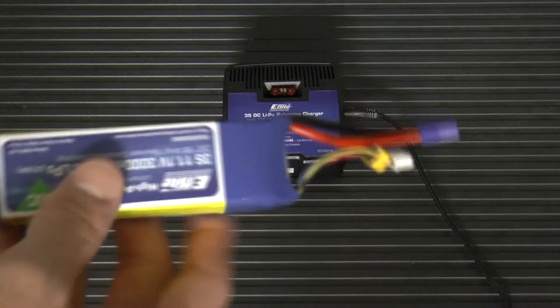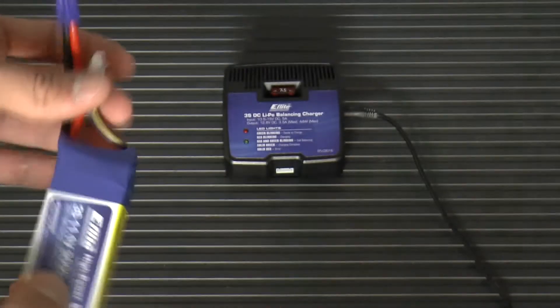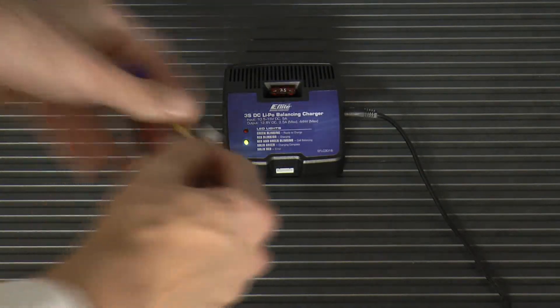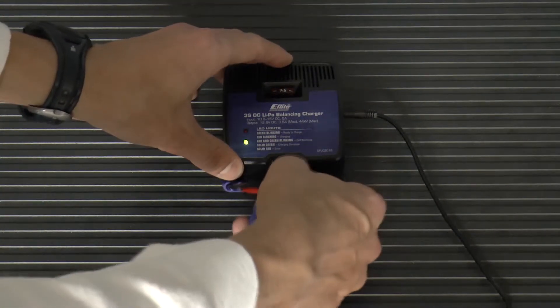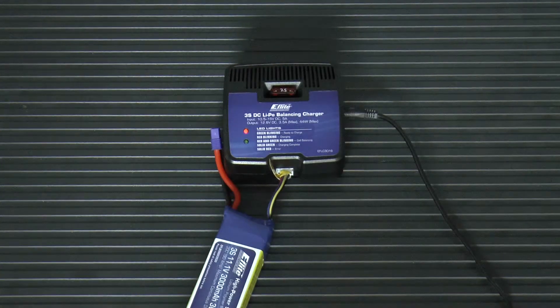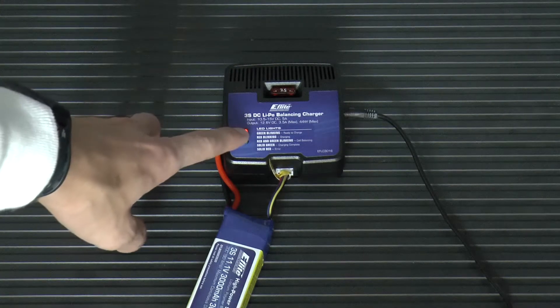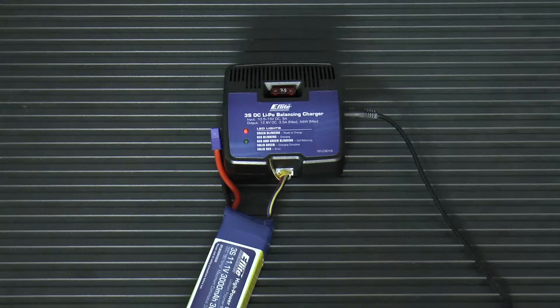Then you disconnect the battery from the drone, pull it out, and then take the white lead here and plug it in to the charger. When you do that, you will see that the LED then switches to this red one above it and will flash.